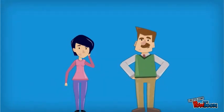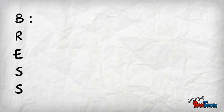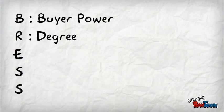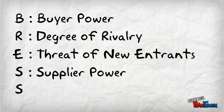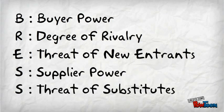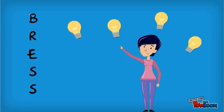This is actually very simple to use. I created the acronym BRESS — B-R-E-S-S — to remember each of the forces. B for buyer power, R for rivalry, E for threat of entrants, S for supplier power, and S for threat of substitutes. That makes it a lot easier.